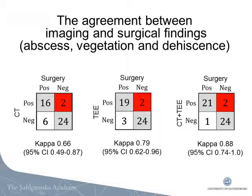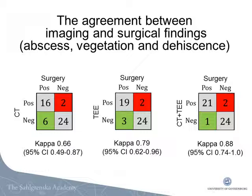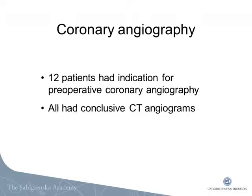The only two imaging findings not confirmed at surgery were vegetations in two patients, seen with both CT and TEE. Whereas six surgical findings eluded detection with CT and three with TEE, only one surgical finding was not detected when combining the findings of CT and TEE. Twelve patients had indication for preoperative coronary angiography, and the CT study provided a conclusive CT angiogram in all cases, so no patient underwent invasive coronary angiography.